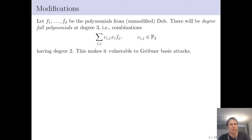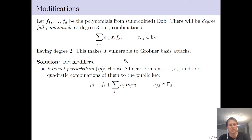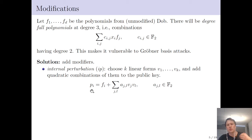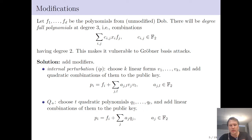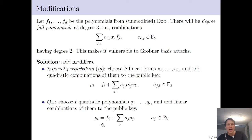In order to hide these degree-fall polynomials, you typically modify the scheme. We'll talk about the two types of modifiers used in the DUB encryption scheme. The first is internal perturbation (IP): you choose k linear forms v_i and add quadratic combinations of them to your public key, leaving you with a new modified public key. The other modifier, used in conjunction with IP, is Q+: you choose t random quadratic polynomials and add linear combinations of them to the public key in a similar way.